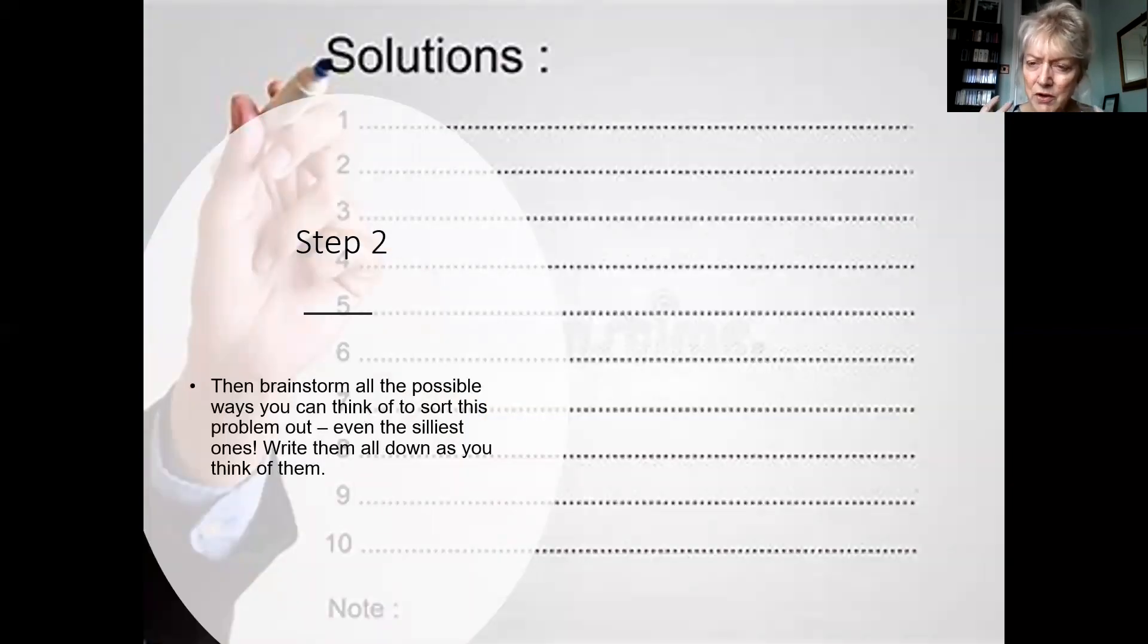Step two: you then thought-storm or brainstorm all the possible ways that you can think of to sort that problem out and you'll write them all down, as many as possible. You can work with someone else to do this, work with a trusted adult or your friend, but actually writing down as many as possible that you can think of.